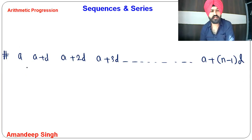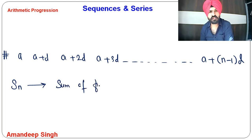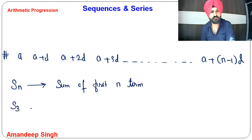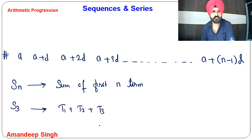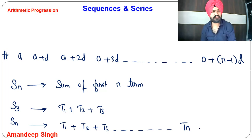Now if you have to find the sum, we talk about SN. What does SN mean? This means summation up to N terms — the sum of the first N terms. So SN means term number 1 plus term number 2 plus term number 3 and so on up to term number N. SN is the sum of the first N terms.